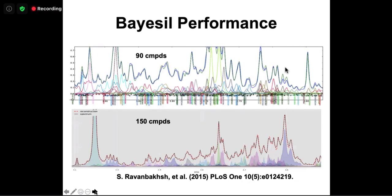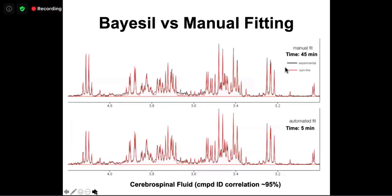Here's an example of BASIL's fitting — for a spectrum with 90 compounds, the blue-green line is the actual spectrum and all those colored peaks below represent the fitting. It can do this for 150 compounds as well. This is the strength of automatic deconvolution: the computer doesn't get tired and can see patterns where humans can't.